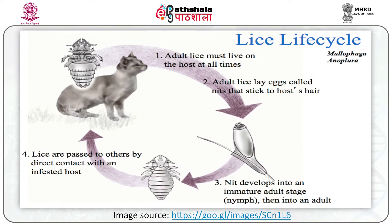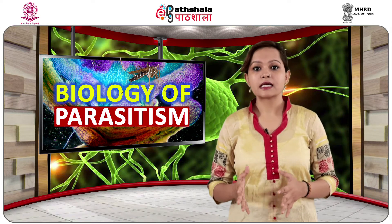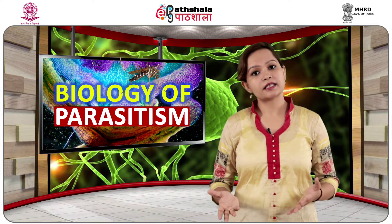Adult female lice lay around 80 to 300 whitish eggs, which are glued to the hair, skin or clothing of the host. Development is hemimetabolous. Eggs hatch in 5 to 20 days and nymphs emerge. The antennae of the nymph are made up of 3 segments, while in adults there are 5 segments. Temperature plays an important role: development will not occur below 23 degrees centigrade or above 38 degrees centigrade. Once emerged, nymphs start feeding on the host; if they fail to feed within 24 hours, they die.